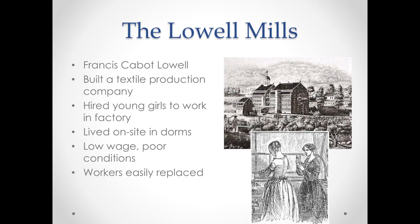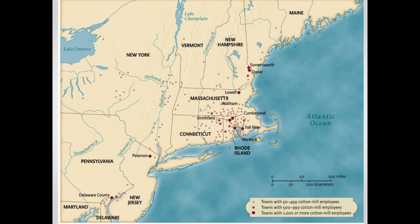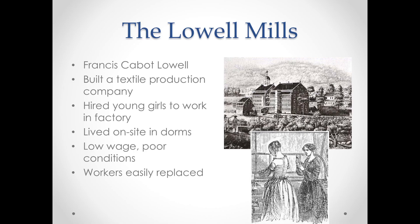Workers were also easily replaced, and there wasn't the personal connection with an employer that you might have working on a farm or for a neighbor. During this period, mills started popping up especially in the Northeast — cities like Lowell, Smithfield, Cumberland, Fall River, Warwick, and Dover. Mills in the Northeast were a very booming industry during this period.